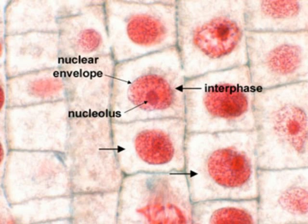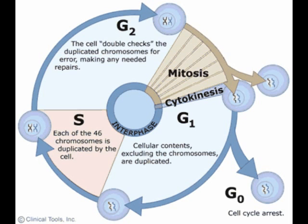The amount of time the cell takes for interphase varies widely. Some cells, such as nerve and muscle cells, typically do not complete the cell cycle and are permanently arrested. These cells are said to have entered the G0 stage. Embryonic cells complete the entire cell cycle in just a few hours. For adult mammalian cells, interphase lasts for about 20 hours, which is 90% of the cell cycle.